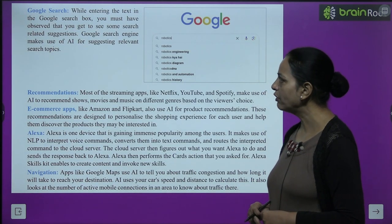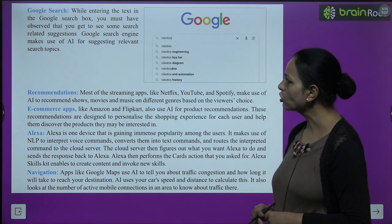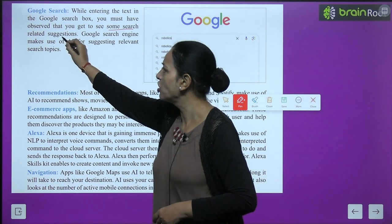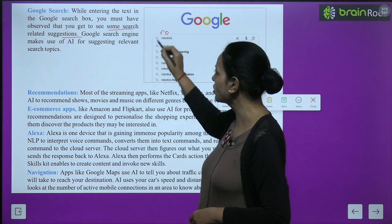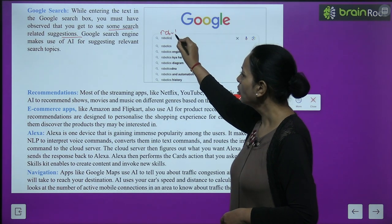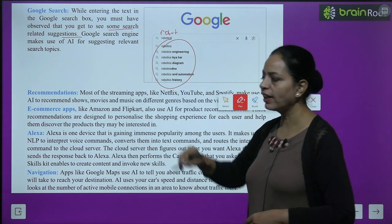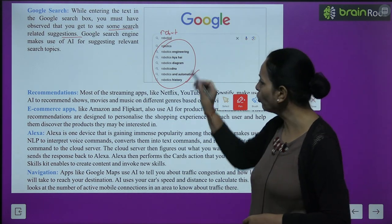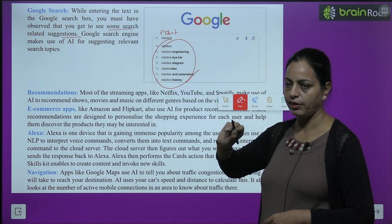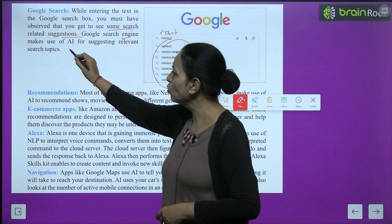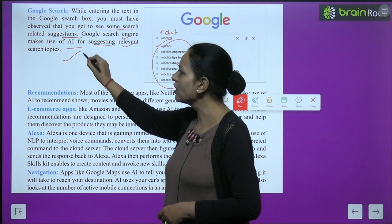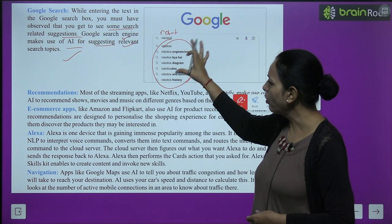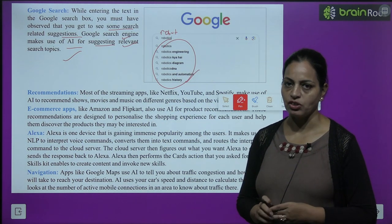Google Search. While entering text in the Google search box, you get to see some search-related suggestions. Google search engine makes use of AI for suggesting relevant search topics. AI ne itna easy bana diya hai humara work — ki hume sirf kuch letters type karne hain, aur automatically so many suggestions aate hain.